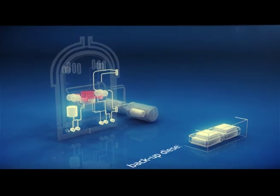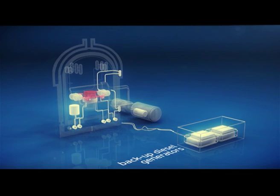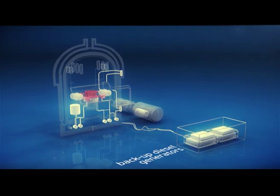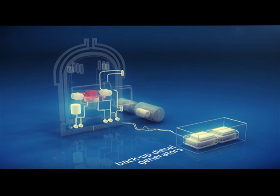Each unit with a VVER reactor includes four independent diesel generators located in different rooms to exclude a possible common cause of failure.